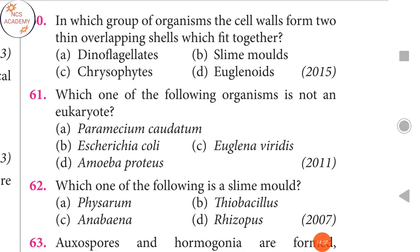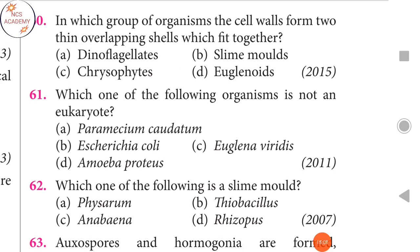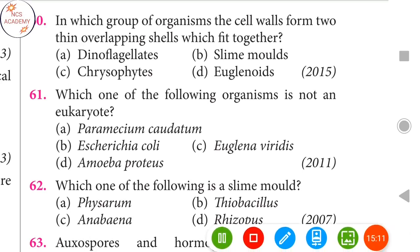Next question: In which group of organisms do the cell walls form two overlapping shells which fit together? The answer is Chrysophytes. We can see more trick questions in the next part of the video.